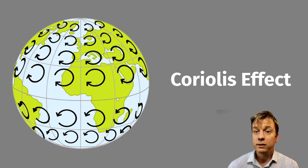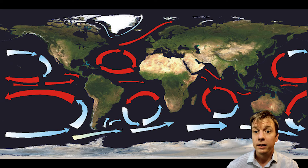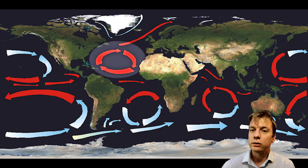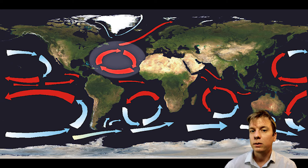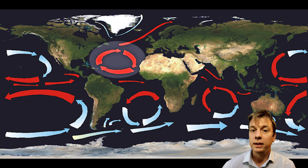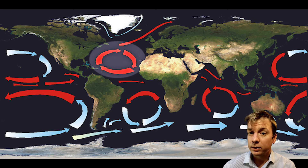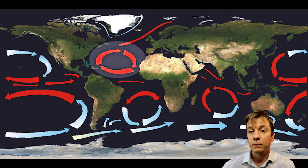The trade winds and westerlies also produce ocean currents. In the North Atlantic, for example, the prevailing winds create a clockwise circulation in what is known as the North Atlantic gyre. Along with the many different wind-impacted currents throughout the world's oceans, temperature also impacts the movement of ocean water.